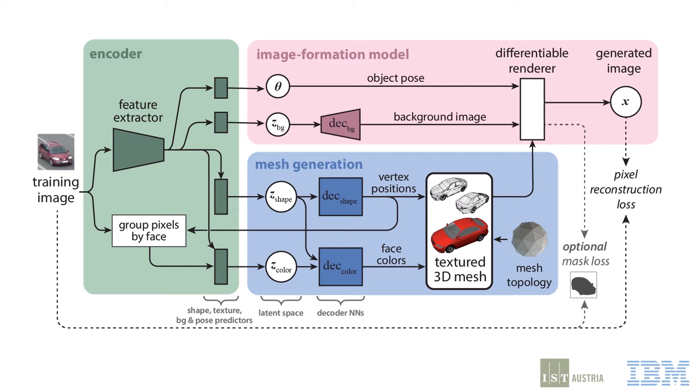We train the model in two different settings. The first is with ground truth segmentation masks. In this case, we have an additional loss term that encourages the rendered silhouette to match the ground truth mask. The second is without masks, so we have only the pixels to learn from.